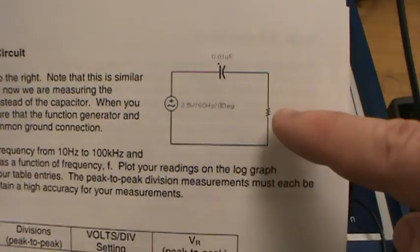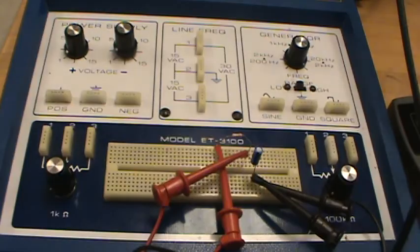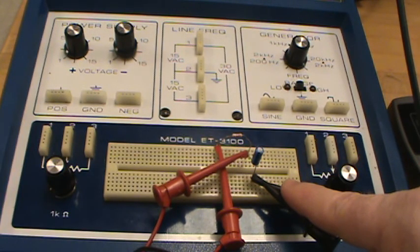For the next part, they're asking you to measure across the resistor instead of across the capacitor. A lot of times people forget about the common ground necessary for making oscilloscope measurements.